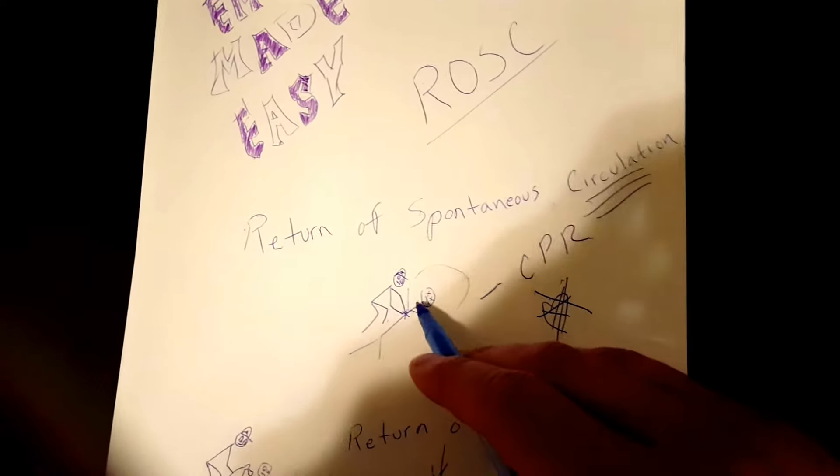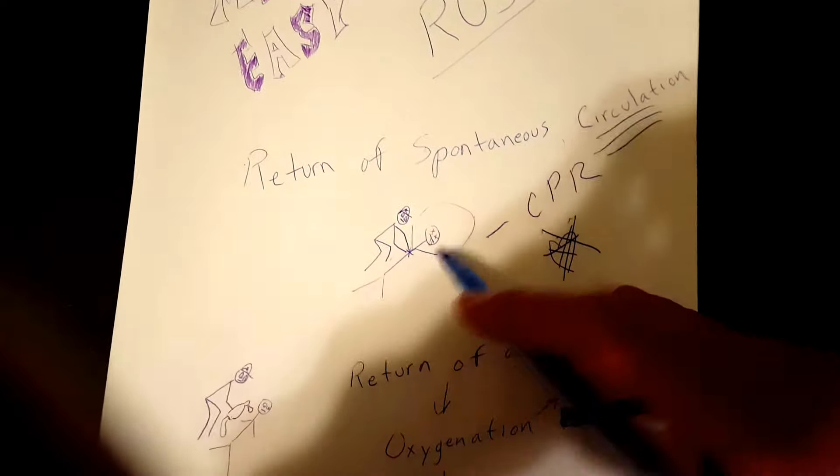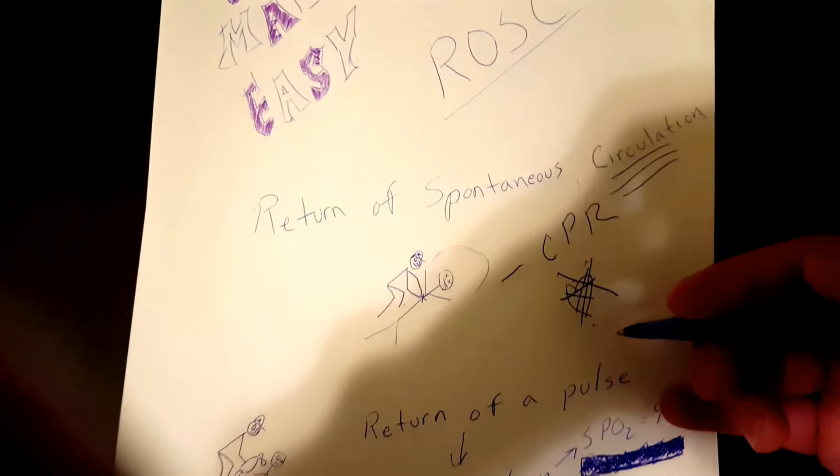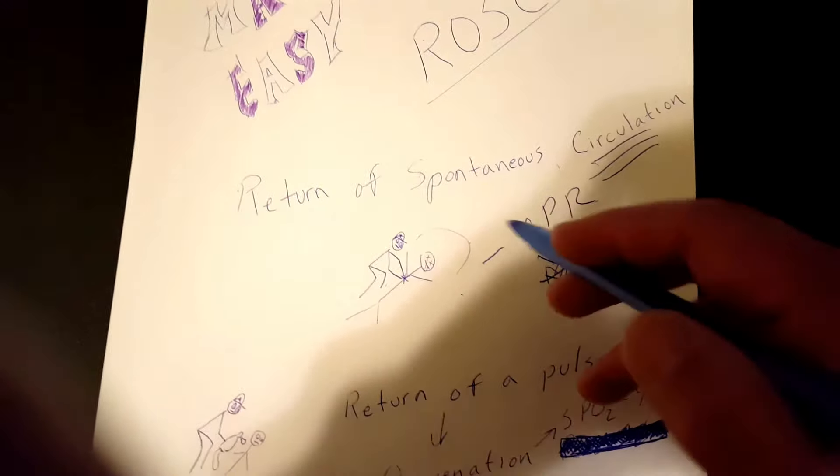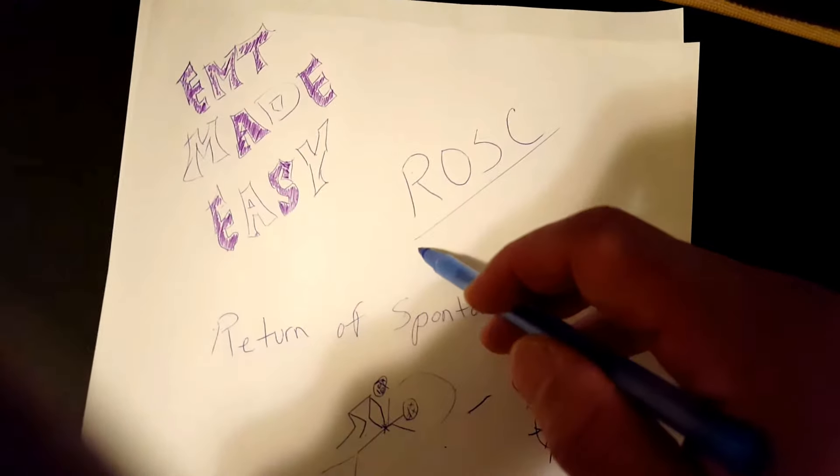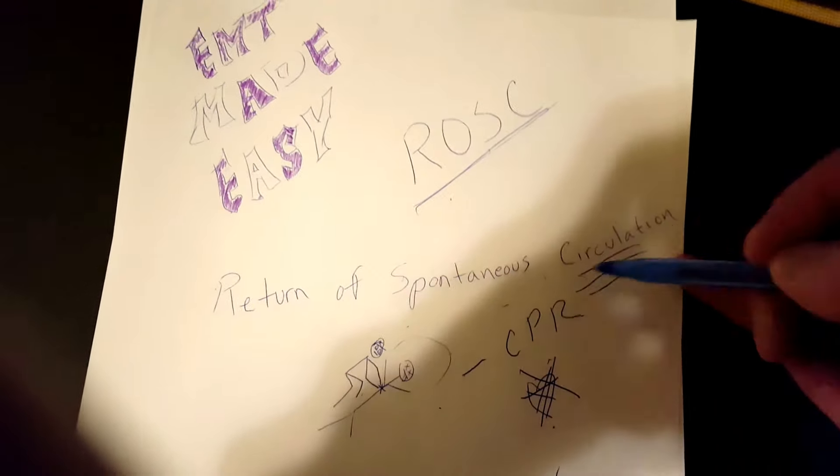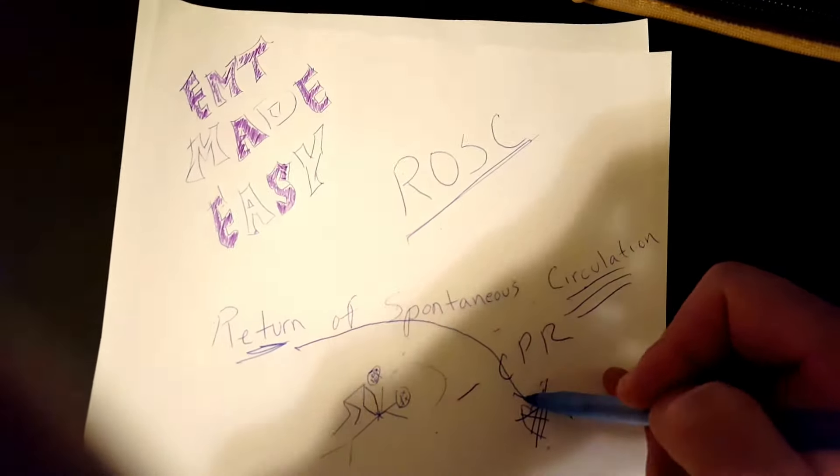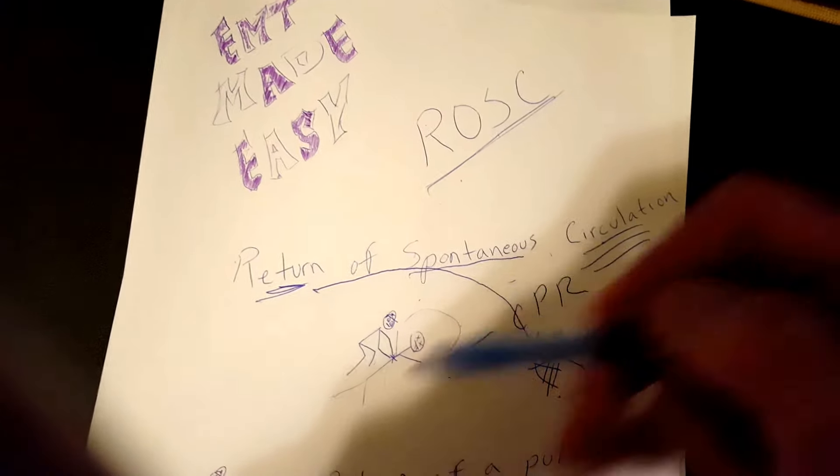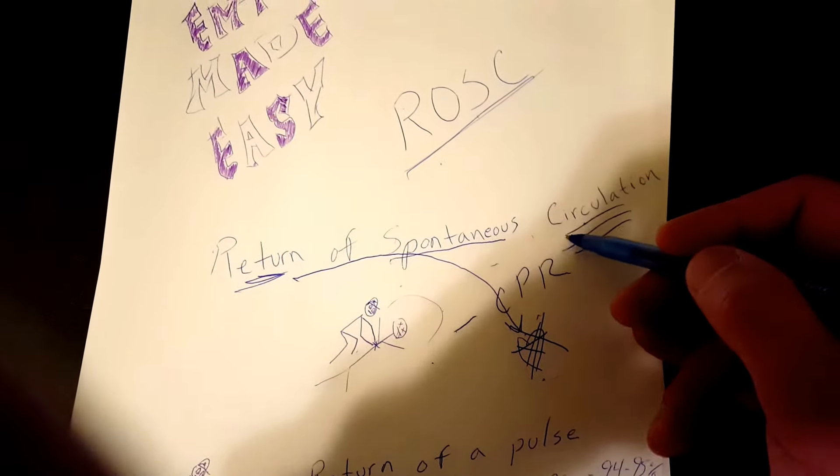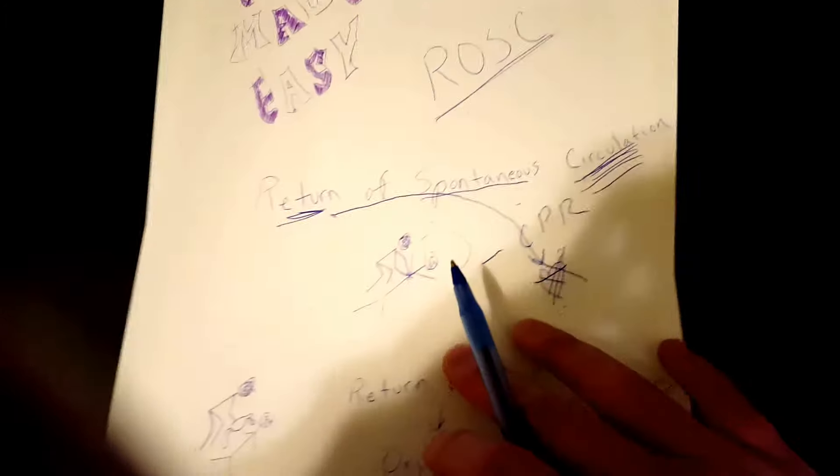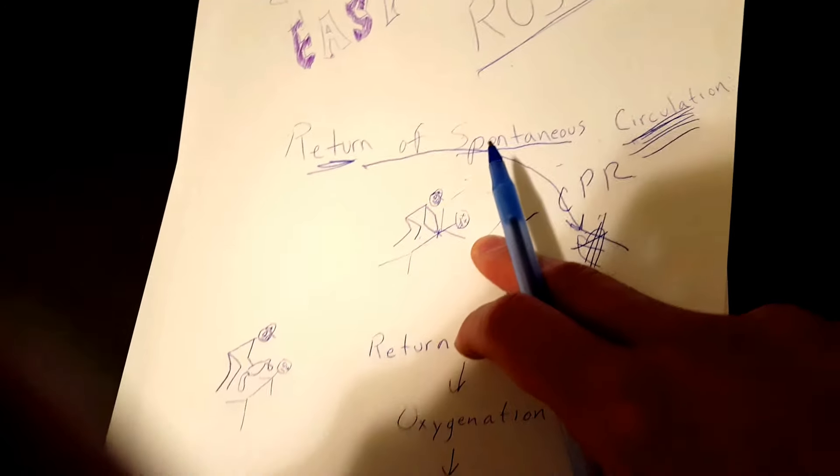After you've been doing CPR for a while - compressions, breathing, compressions, breathing, maybe you shock the patient a few times - the patient gets a pulse back. When the patient gets a pulse back, that is referred to as ROSC, return of spontaneous circulation, because the heartbeat is returning spontaneously after you did CPR, and that's gonna provide circulation of the blood throughout the body.